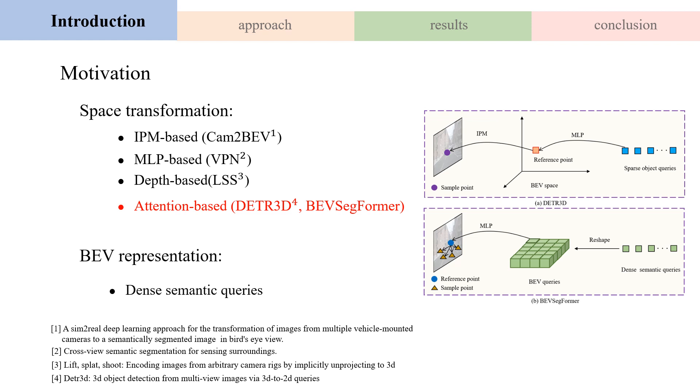Inspired by DETR3D, we propose a method to compute the view transformation from BEV to image queries using the cross-attention mechanism in the transformer. Our approach differs from DETR3D in several ways. First, BEV segforma builds dense BEV queries for the semantic segmentation task.